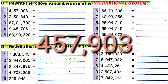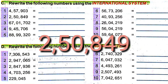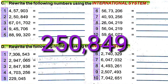So the number is 457,903. Next number is 250849. Here also there are six digits. We have to put a comma between the 3rd and 4th digits, that is between 0 and 8. So the number is 250,849.